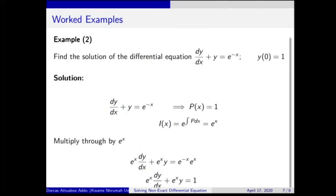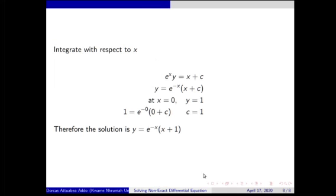Now for the second example, which is also straightforward. We have the differential equation and an initial value problem. Again, p(x) equals one, so the integrating factor is e^x. Multiplying through and integrating with respect to x gives the general solution. Applying the initial condition x = 0 and y = 1, we find c equals one. The particular solution is y = e^x · (x + 1).